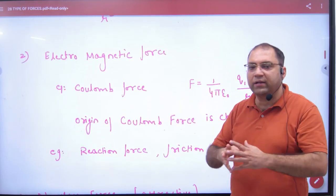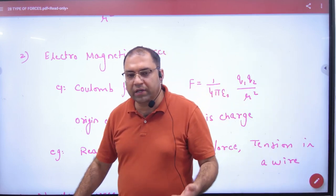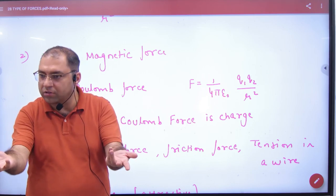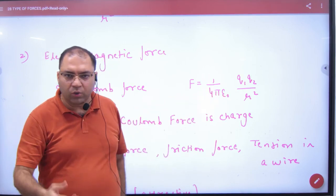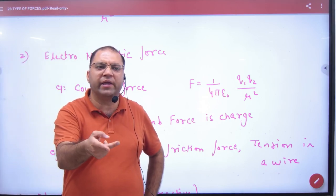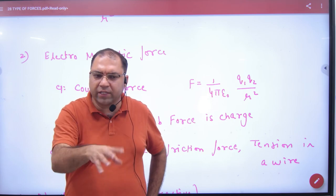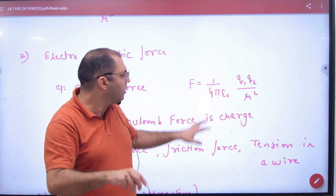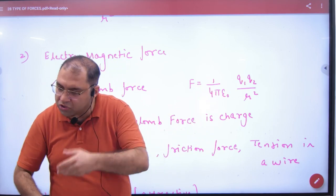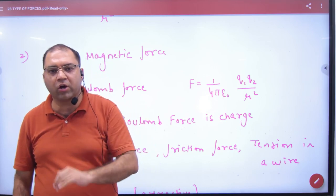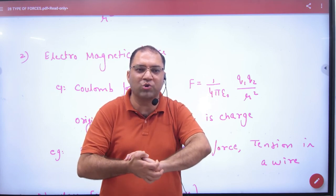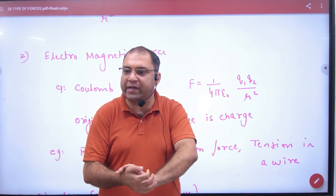The second type of force is electromagnetic force. The reason for this electromagnetic force is charge — it's the Coulomb force. Positive-positive repel, positive-negative attract. Now, a question comes: if two people shake hands, which force is gathered between them? Coulomb force — it is the electromagnetic force.